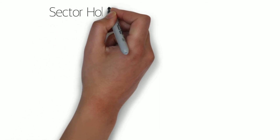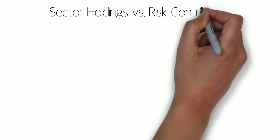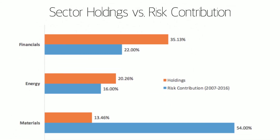The resulting picture can be quite different. Here are the three sectors with the highest weights, shown in orange, in our TSX capped composite index. The blue series shows the risk contribution of the same three sectors in a nine-year timeframe, between 2007 and 2016.